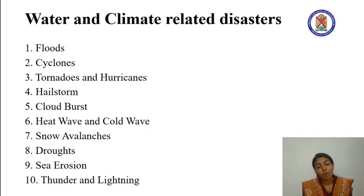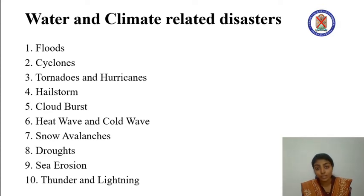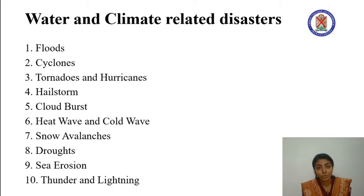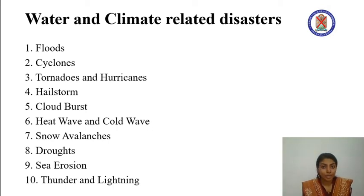Water and climate related disasters include flood, cyclone, tornadoes, hurricanes, cloudburst, heat and cold wave, snow avalanches, drought, sea erosion, and thunder and lightning. We'll see them one by one.